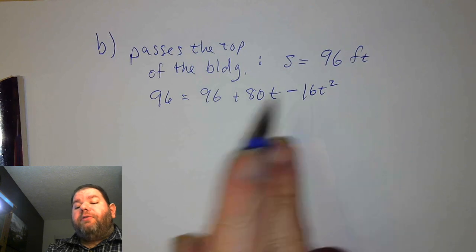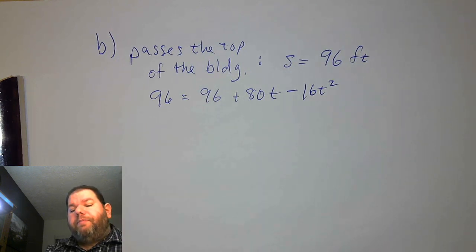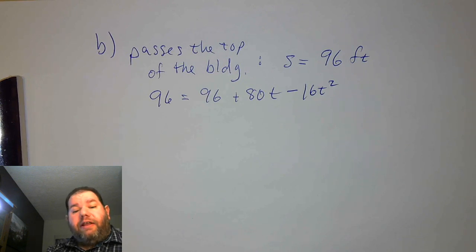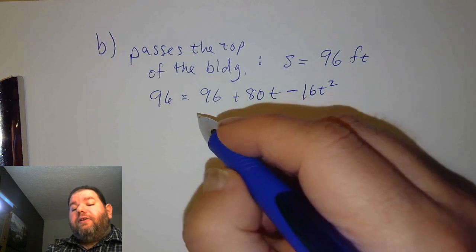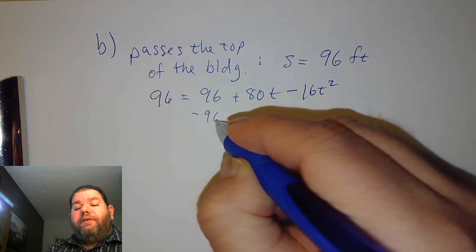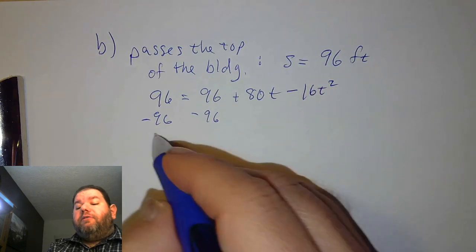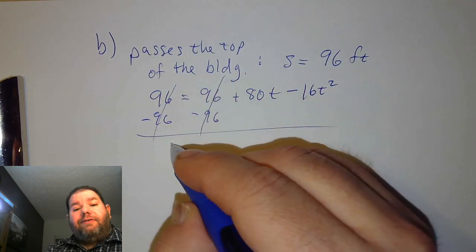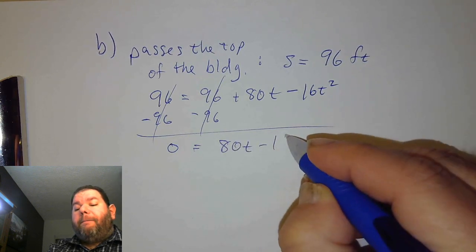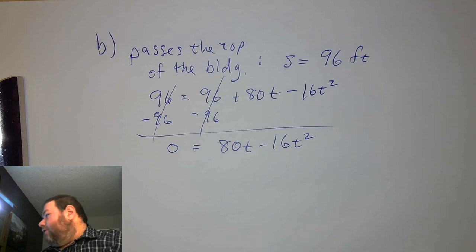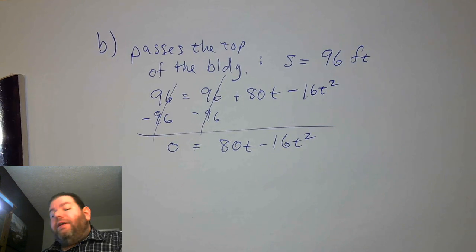It's the same equation, but now set equal to 96. The good thing is this ends up being a little easier than the last one, because we have 96 on both sides. If we subtract 96 from both sides, both 96s cancel out. So we end up with the equation 0 equals 80t minus 16t squared.